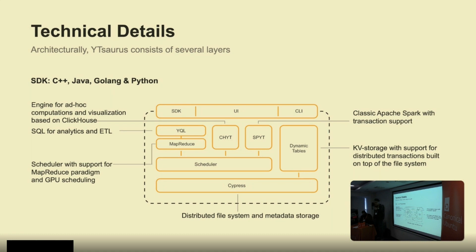Since no one is writing MapReduce operations in 2023, we have processing engines to easily process your data. First is YQL, a SQL-like interface — very nice and easy to use, similar to Apache Hive. It translates your SQL queries to MapReduce operations, allowing you to process batch data, join it, and so on. Latency is not great — if you're talking about minutes it's okay, but if you need seconds it may be too slow.